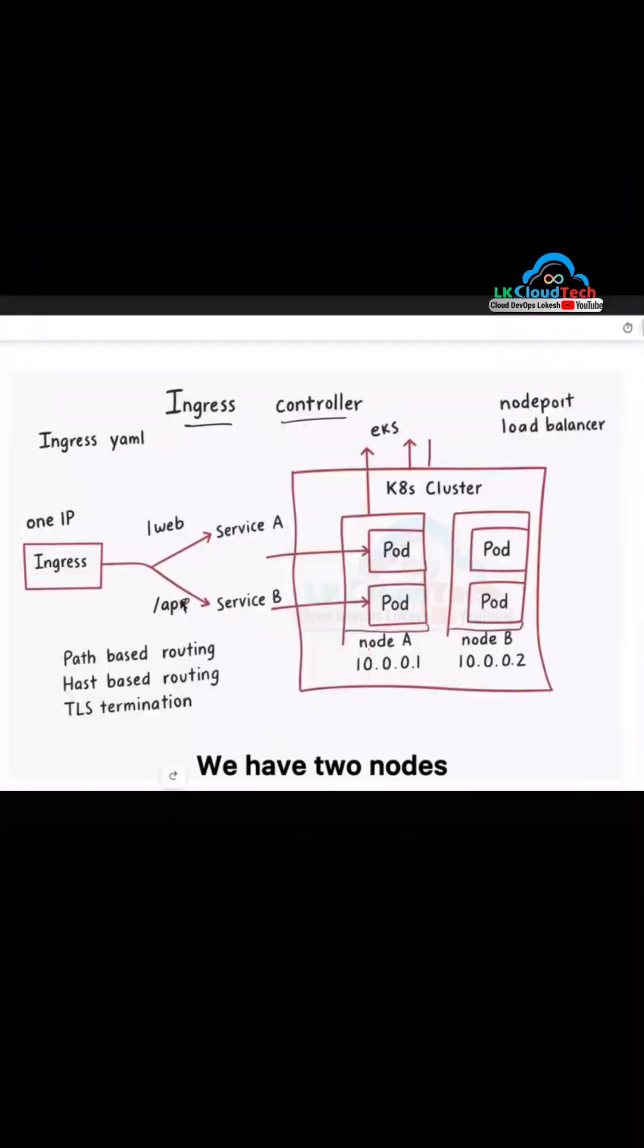In this video, I'll explain four things about Kubernetes ingress. We have two nodes, each running multiple pods for two different services, Service A and Service B.